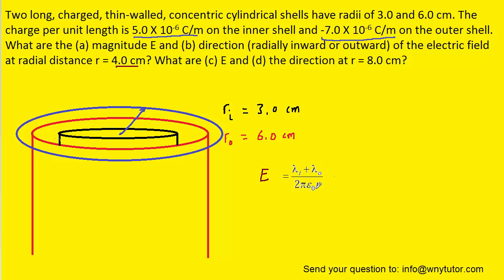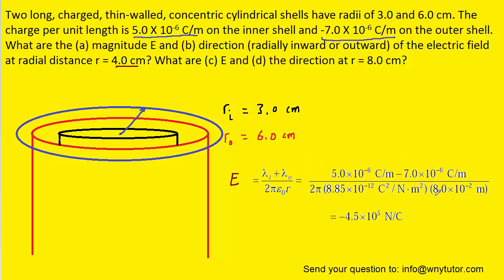We'll go ahead and plug in all the known values. We've plugged in all the known values. Note that the distance is 8 centimeters, though we converted it into meters. When you simplify that, you get a value of negative 4.5 times 10 to the positive 5 newtons per coulomb.